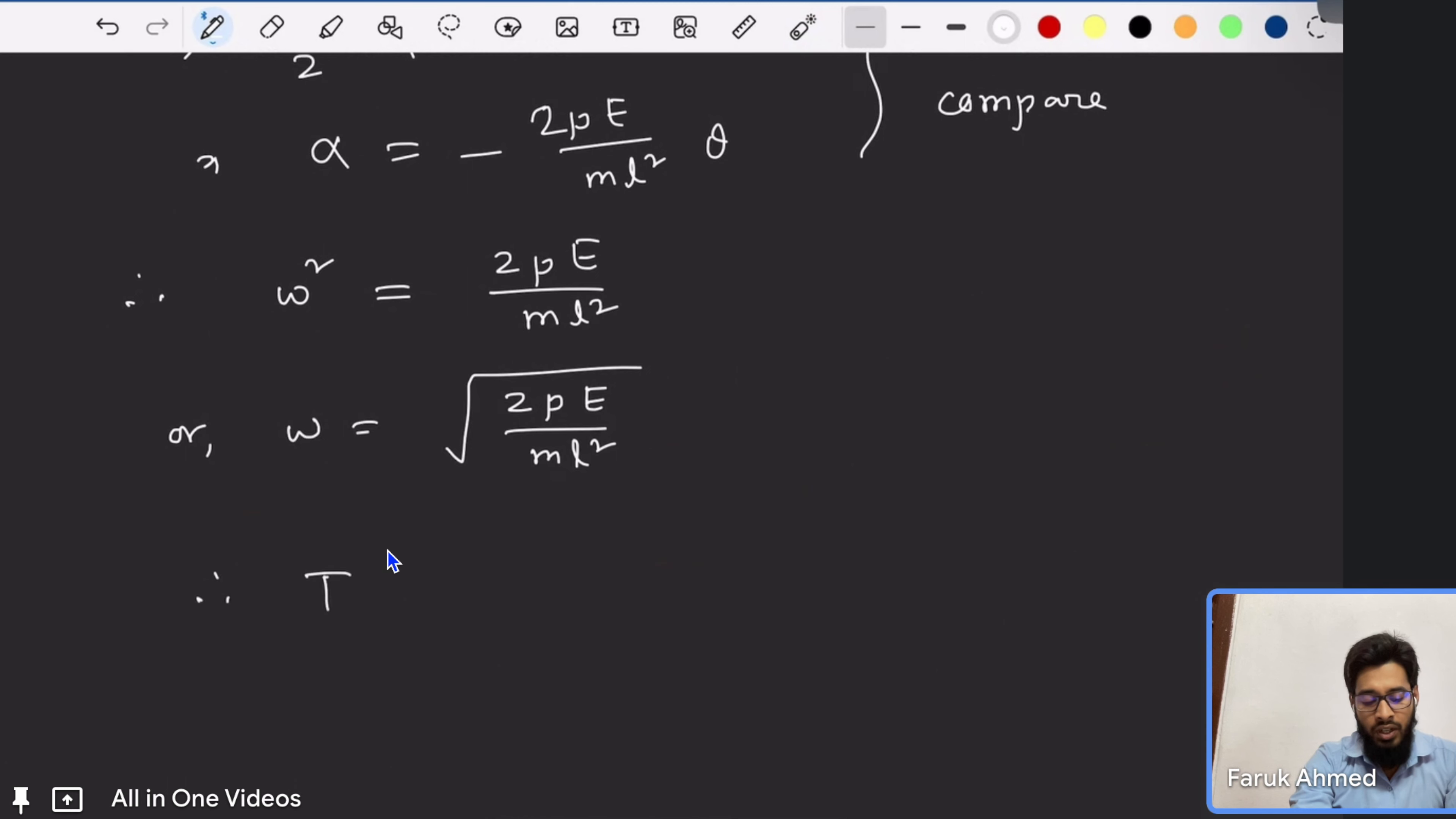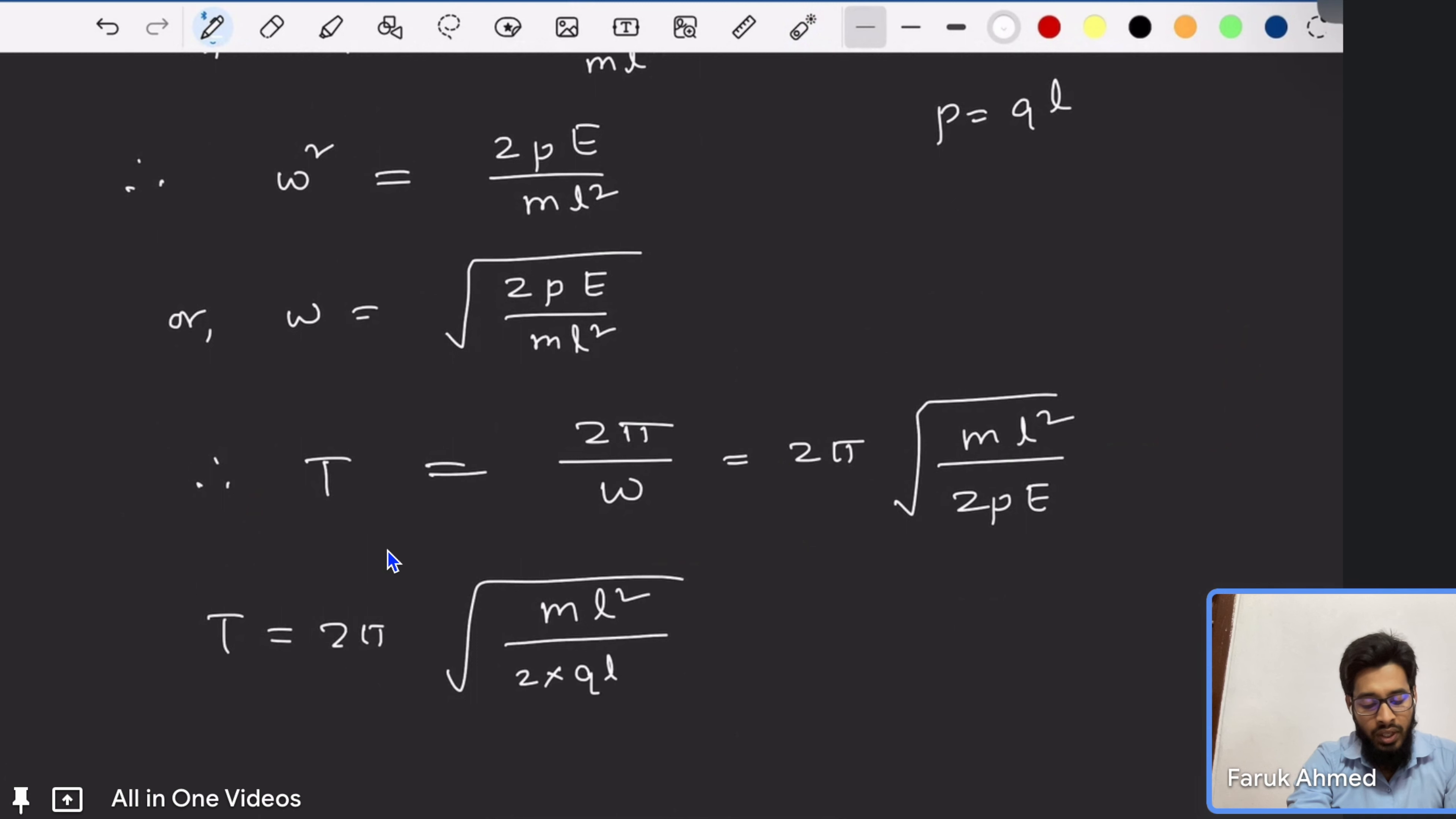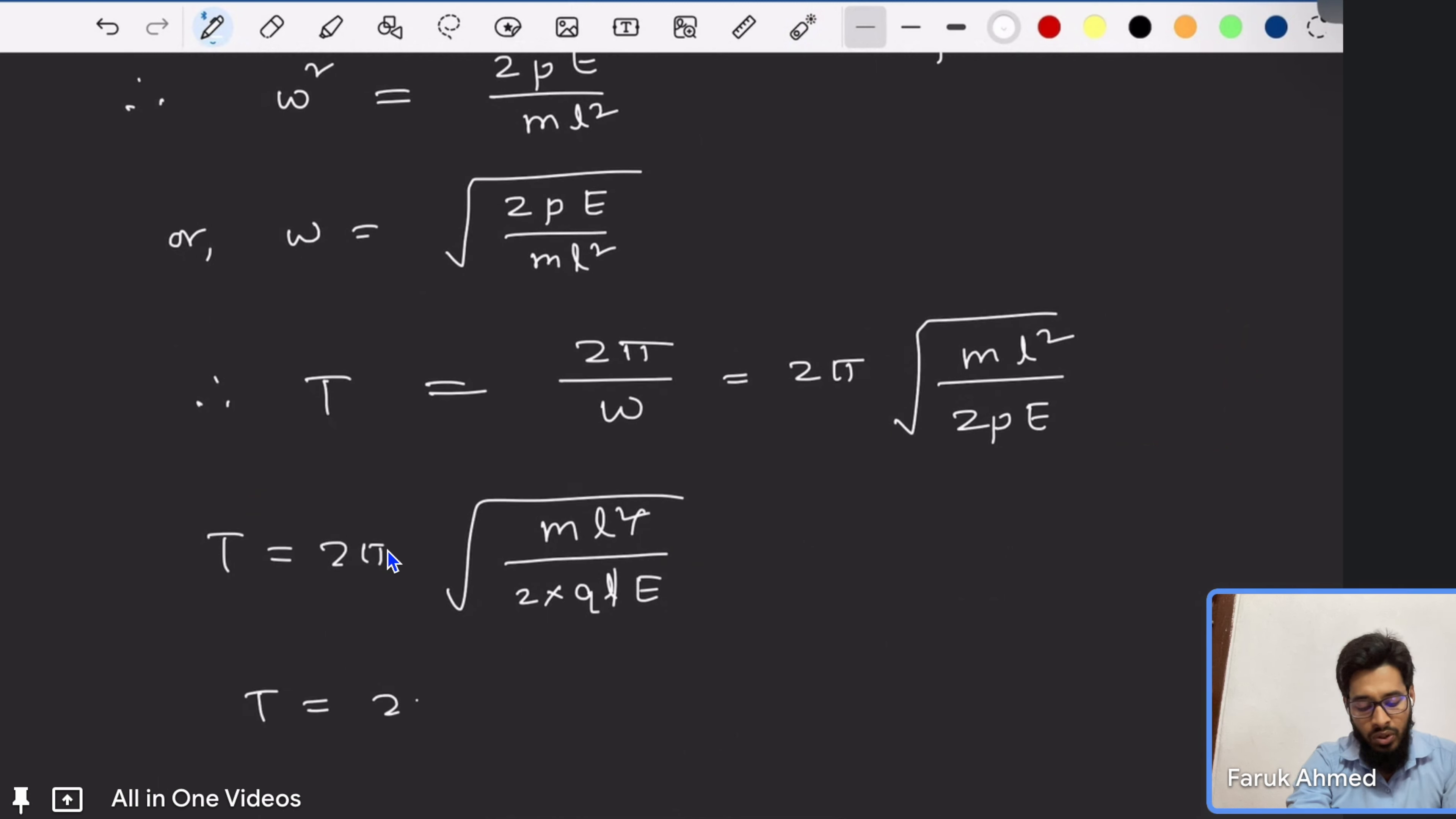Now omega we got equal to square root 2 p E by m l squared. Then we can write time period formula T is equal to 2 pi divided by omega. So 2 pi omega inverse will take - square root m l squared by 2 p E. Now tell me one more thing. Here p is equal to q into l, the separation. Then instead of p we can write T equals 2 pi square root m l squared divided by 2 times q l E. So one l gets cancelled. Time period is equal to 2 pi square root m l divided by 2 q E. This will be your answer.